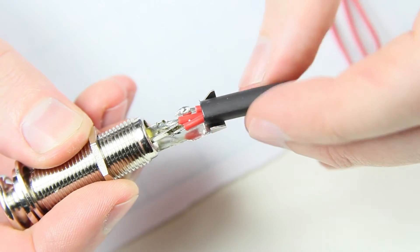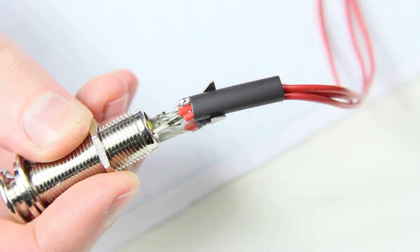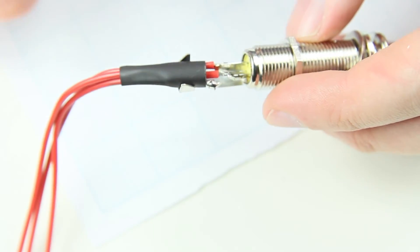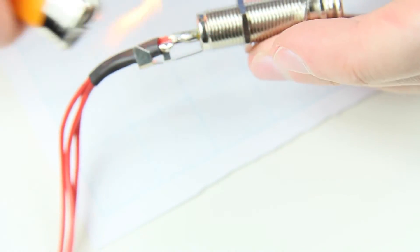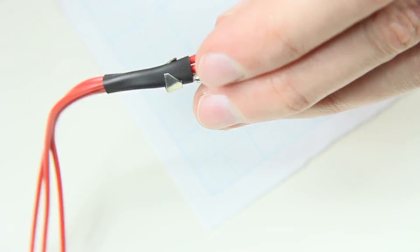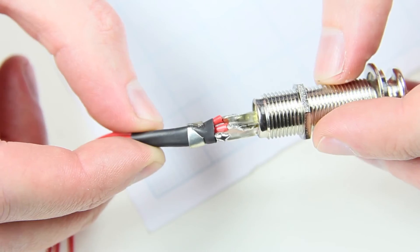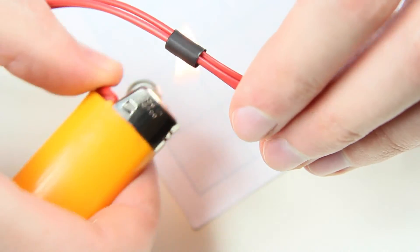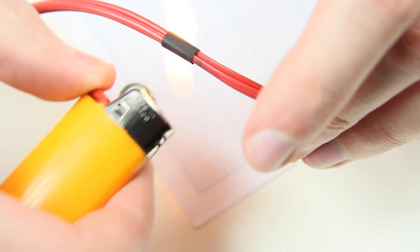The longest piece of heat shrinking tube will be applied and heated before closing the clamp. Actually, the right tool would be a hot air gun. We use a lighter to shrink the bundle tubes.